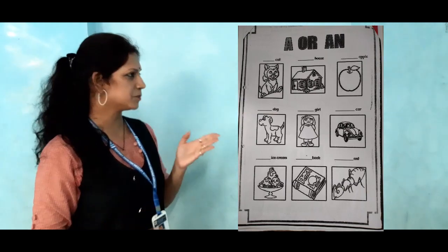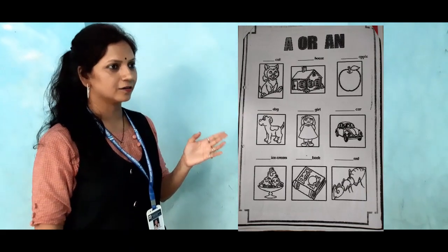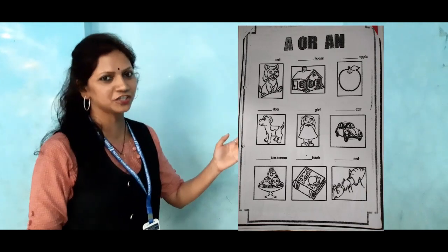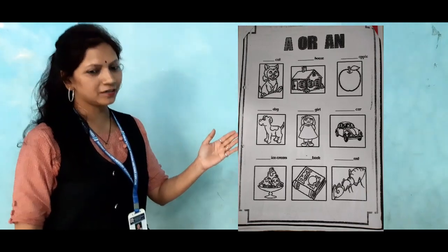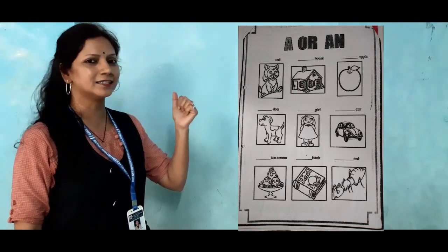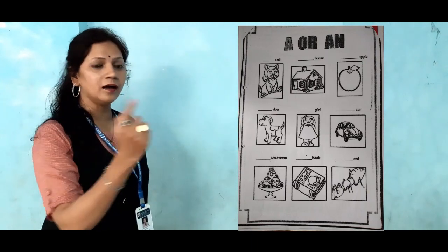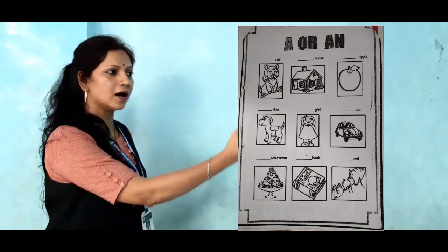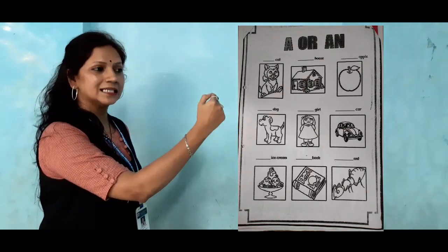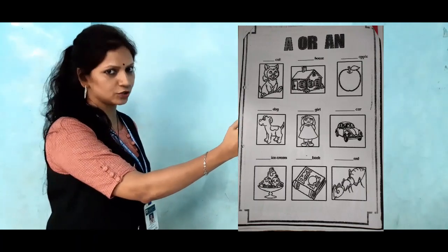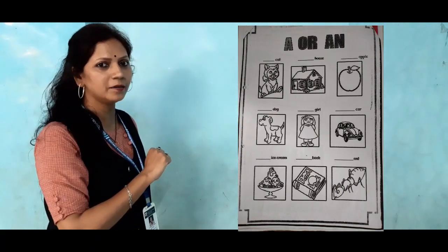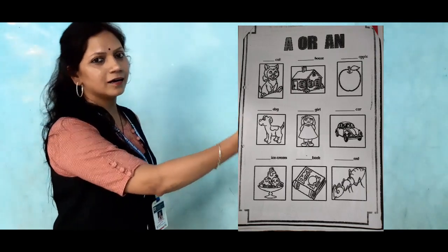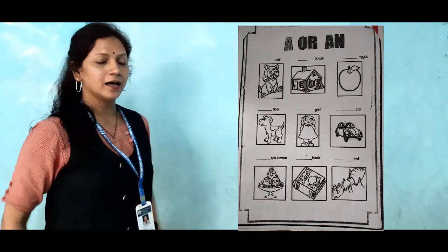Our next picture is a kite. Meera, Agri, can you answer my question? Look at this picture and write down the answer. Meera, tell me which picture is this? This is a kite. We are starting with the C letter. C is a consonant. So, what will come here, Meera? A kite. Very good Meera.